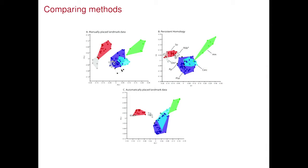More formally, comparing the methods: this is a classic landmark-based method, this is using the Persistent Homology Transform, and this is using a conformal geometry approach. This is not a rigorous proof — it's just showing something empirically. We're doing more simulations, have some results, and are extending these.